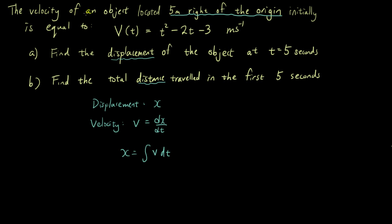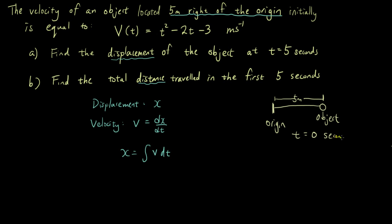The problem is: the velocity of an object located 5 meters to the right of the origin initially. So if you think of this as the origin point, the object is located 5 meters to the right. We're not given the equation for displacement, but the velocity is given as v = t² − 2t − 3, where t is the number of seconds. At t = 0, this is where the object is located. What we want to know is where the object will be at t = 5 seconds.